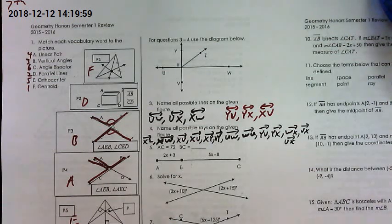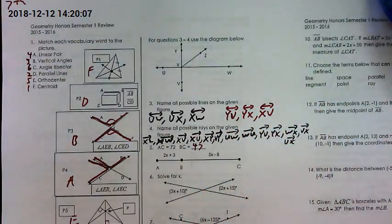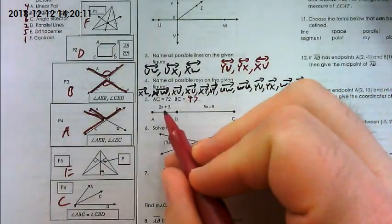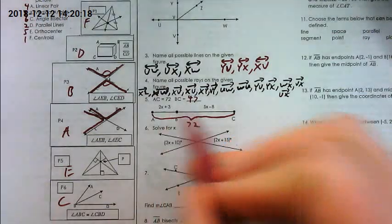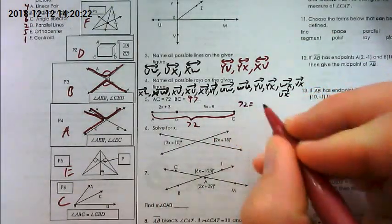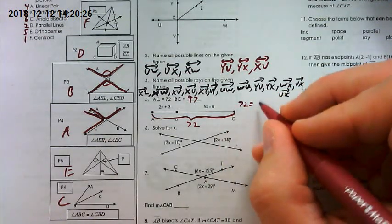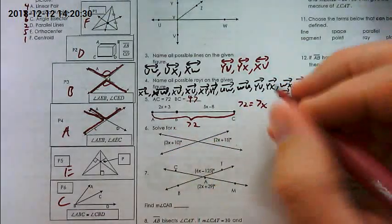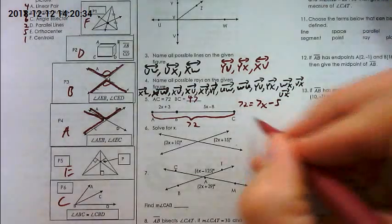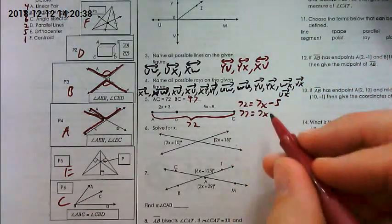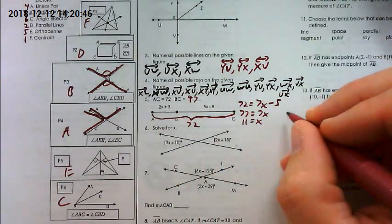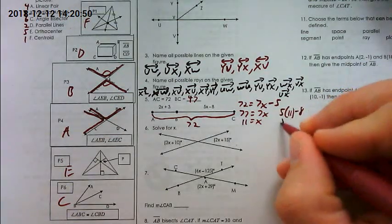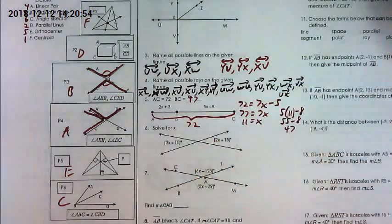Number five, this one was the one that the answer was wrong originally online. The correct answer here is 47. You have 72 is the overall length of this entire segment, so you have to take these two pieces, add them up, and set them equal to 72. So 72 equals 2X plus 3 plus 5X minus 8. That's 7X minus 5. Bring the 5 over, that's 77 equals 7X. Divide by 7 and X is 11. That's not the final answer though. They wanted BC, so you plug 11 back in. 5 times 11 minus 8, that's 55 minus 8, which is 47.